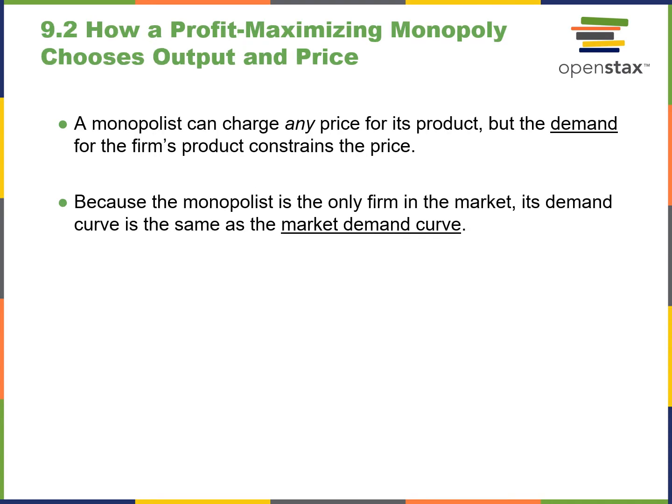Profit-maximizing monopolies choose their output price. Since they can charge any price for their product, demand will constrain the price — if it's too highly priced, people will be forced to avoid it because they simply can't find the money. Because the monopoly is the only firm in the market, its demand curve is the same as the market demand curve. For example, Mylan Corporation charged $600 for an EpiPen, and school districts required to have them in first aid kits had to replace them every six months.